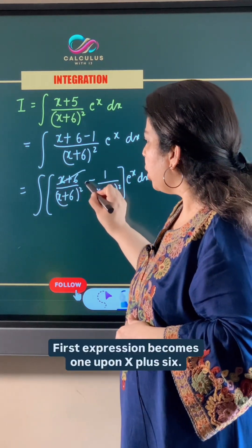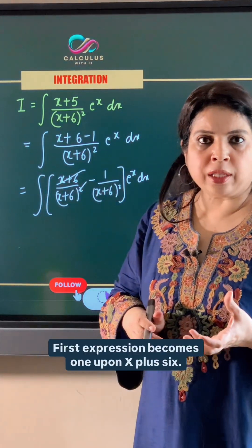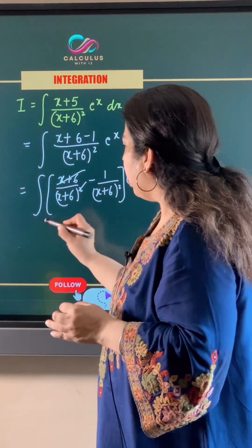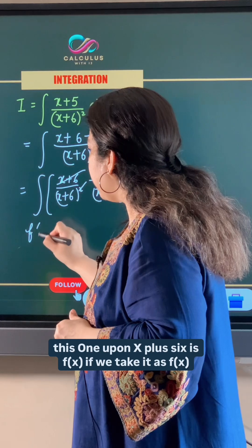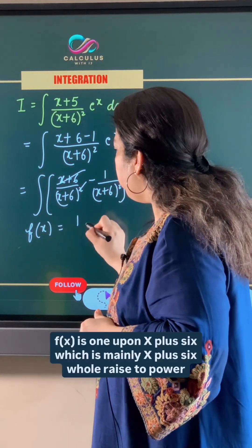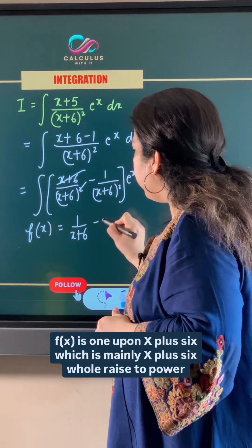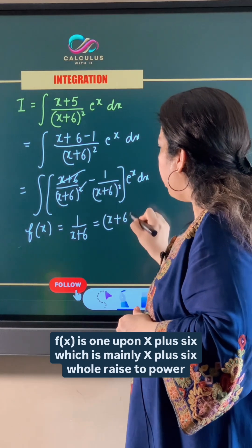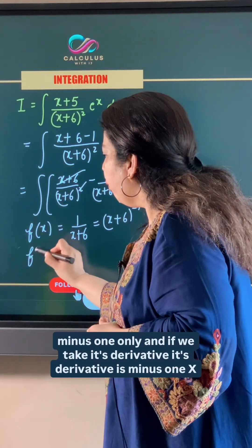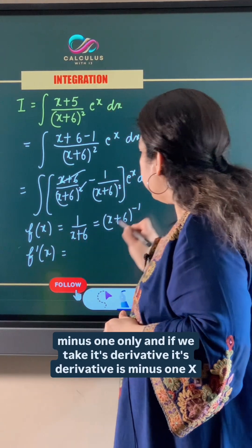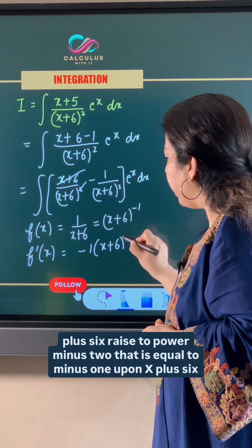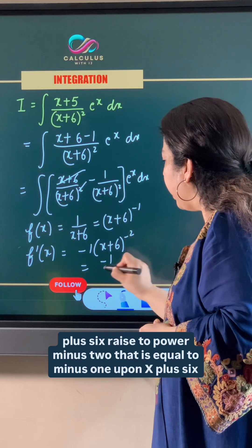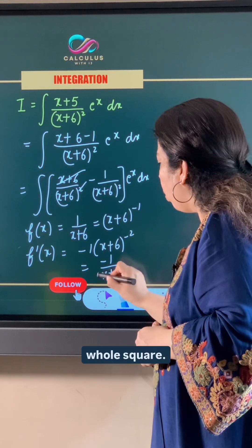First expression becomes 1 upon x plus 6. Now this 1 upon x plus 6 is fx. If we take it as fx, fx is 1 upon x plus 6 which is mainly x plus 6 whole raised to power minus 1 only and if we take its derivative, its derivative is minus 1 x plus 6 raised to power minus 2 that is equal to minus 1 upon x plus 6 whole square.